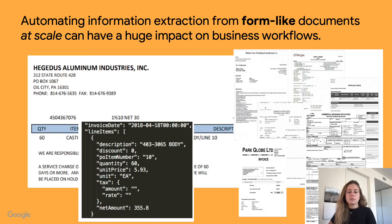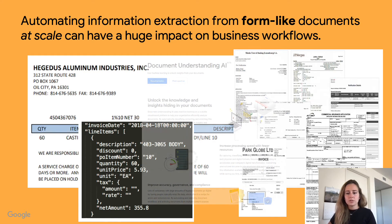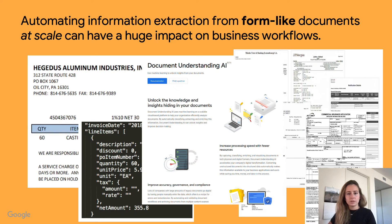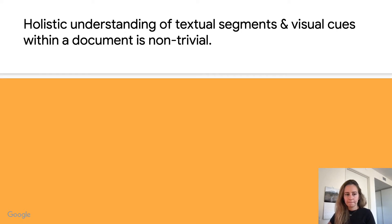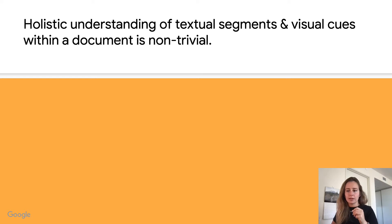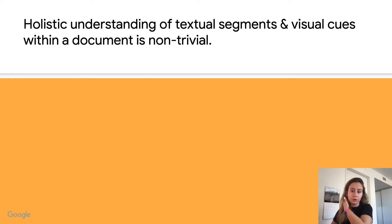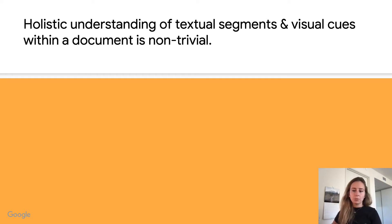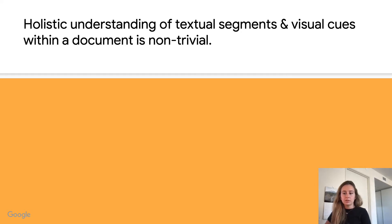The work I'll describe is a research project at Google Research that was eventually used in the Document AI product. A solution to this problem requires a holistic understanding of both the textual segments and the visual cues within a document, which is nontrivial. While the NLP and CV communities are starting to tackle this problem, there has not been much focus on data efficiency and ability to generalize across different documents, types, and languages.